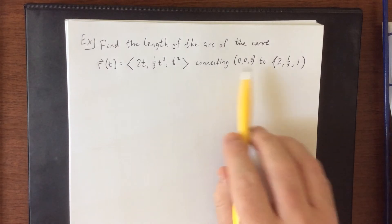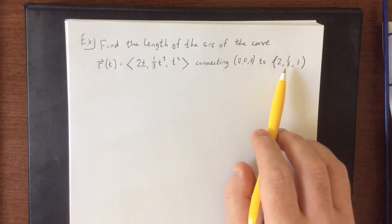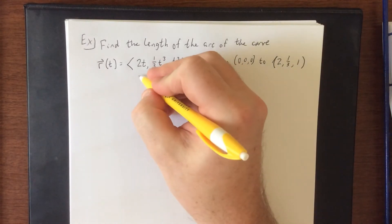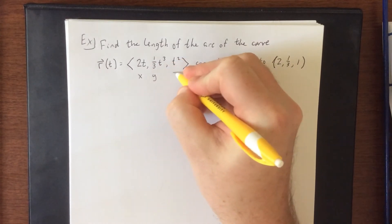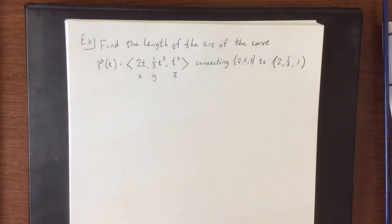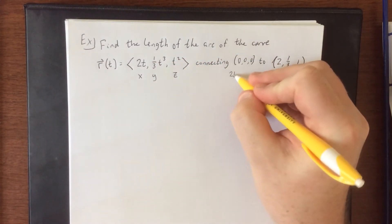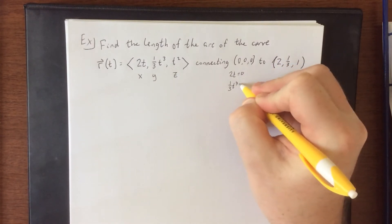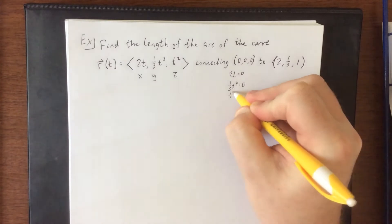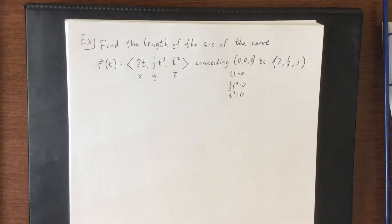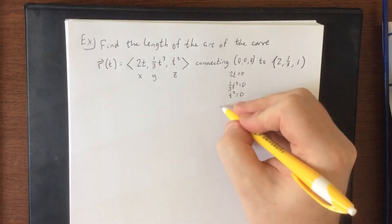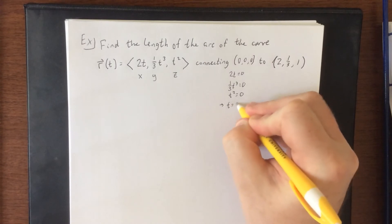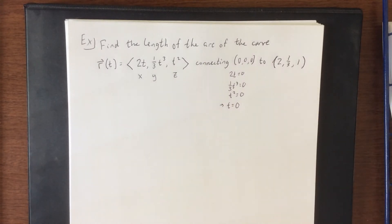Now what these two over here are going to do is let us know what our bounds are, so interpreting these three component functions as x, y, and z. In the first case we're saying that 2t equals 0, one-third t cubed equals 0, and t squared equals 0. Please don't think too hard about this one. It lets us know that t is going to be equal to 0.